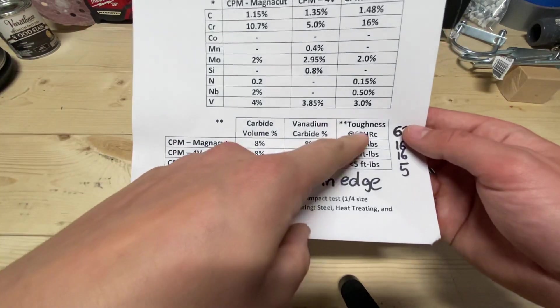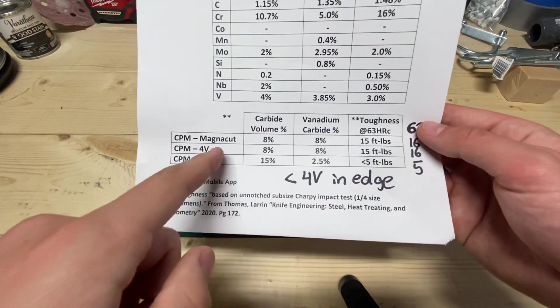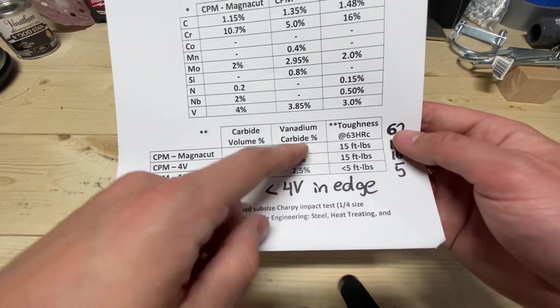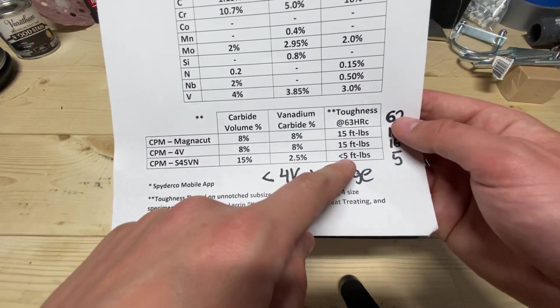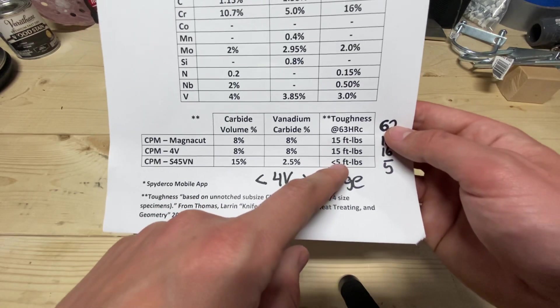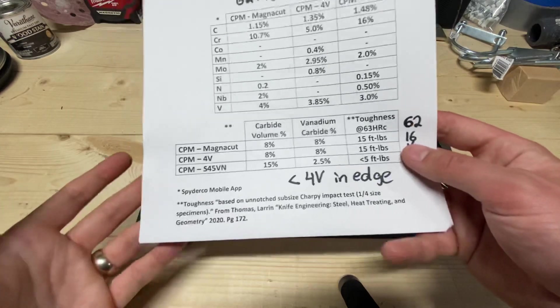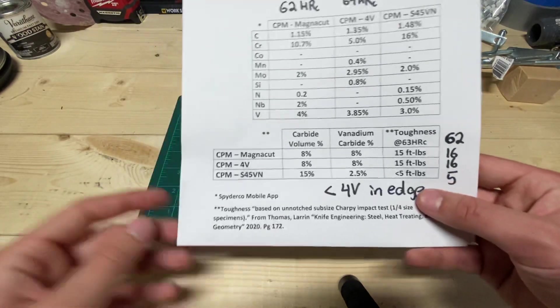And an example of that is, so you see toughness here at 63 Rockwell. So MagnaCut and 4V are the same at 15 foot-pounds, but you go down to S45VN and it's less than a third of that at five foot-pounds.